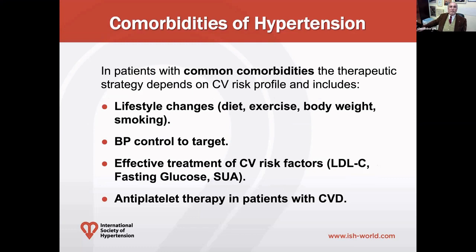The common comorbidities in the hypertensive patient should be treated according to well-known therapeutic strategies that are closely depending on the cardiovascular risk profile of the patient. These include lifestyle changes — in particular diet, exercise, body weight, and cessation of smoking. Of course, we have to treat blood pressure in a very effective way, trying to achieve the targets suggested by guidelines in patients with hypertension.